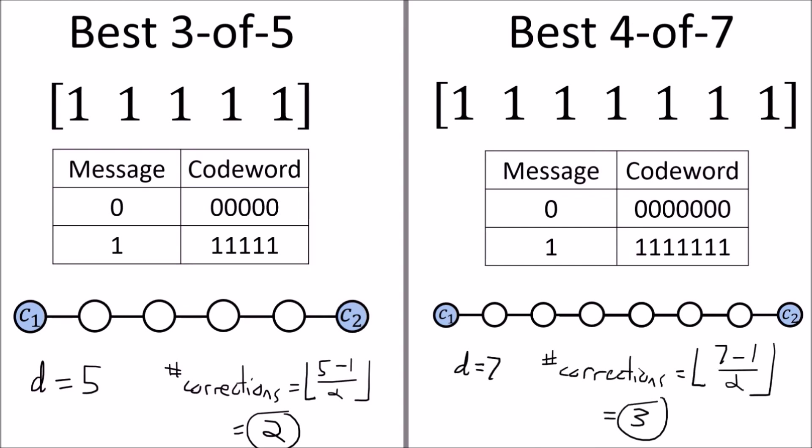While these repetition codes can help us fix multiple errors, the downside is that they are very inefficient when it comes to the transmission rate because we have to repeat the message several times. So in general repetition codes aren't very useful.